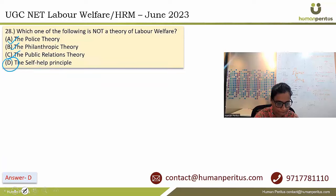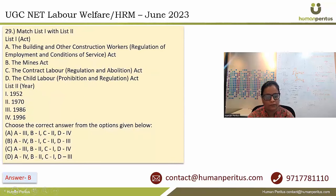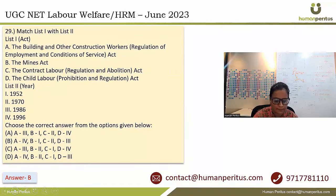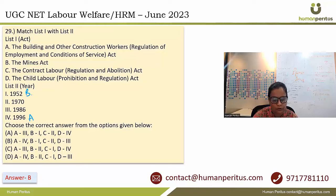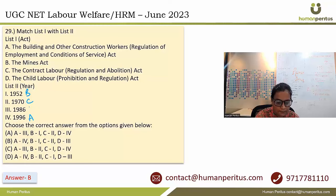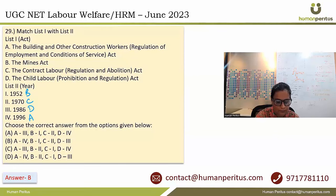We need to match various acts with the year of their formation. Building and Other Construction Workers Act came in 1996, Mines Act in 1952, Contract Labour Act in 1970, and Child Labour Act was enacted in 1986. So B, C, D, A — option B is the correct answer.